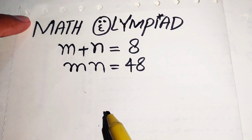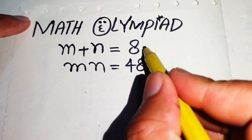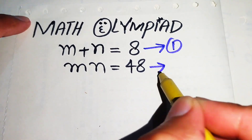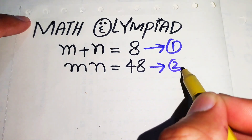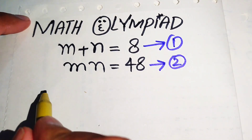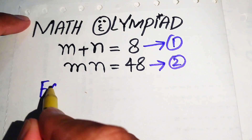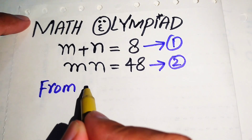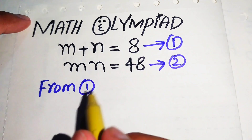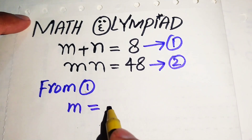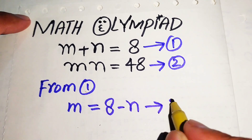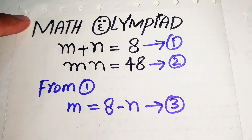First, we call the equation m + n = 8 as equation 1, and m × n = 48 as equation 2. We simplify equation 1 by moving n to the right-hand side, giving us equation 3: m equals 8 minus n.